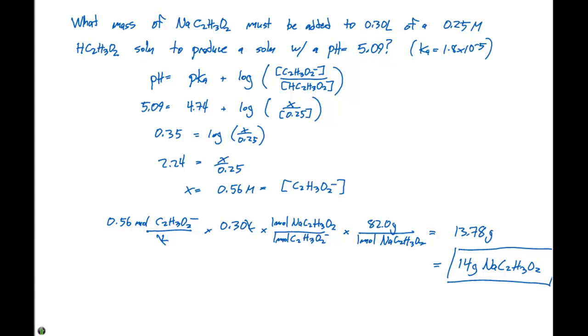When we multiply the molarity and the volume, we'll get number of moles. We then can convert the number of moles of acetate ion to number of moles of sodium acetate, then multiply by the molecular weight using the periodic table. And we end up getting 14 grams of sodium acetate need to be added to 0.30 liters of a 0.25 molar acetic acid solution to give a pH equal to 5.09.